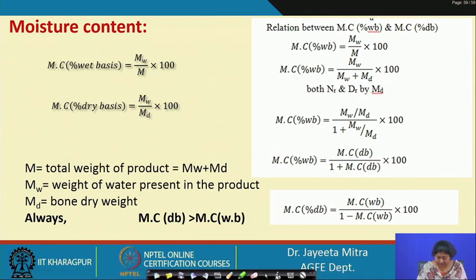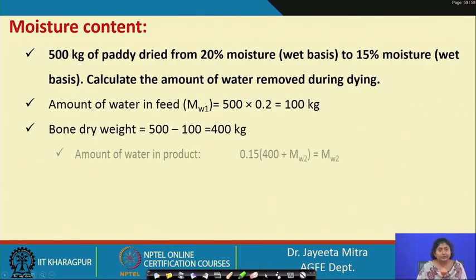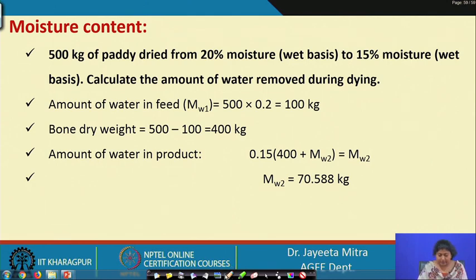Let us take an example: 500 kg of paddy is dried from 20 percent moisture content wet basis to 15 percent moisture content wet basis. We need to calculate the amount of water that needs to be removed during drying. The amount of water in the feed was 500 × 0.2 = 100 kg. If 100 kg moisture is present in the 500 kg paddy, we can easily get the bone dry weight as 400 kg (500 minus 100).